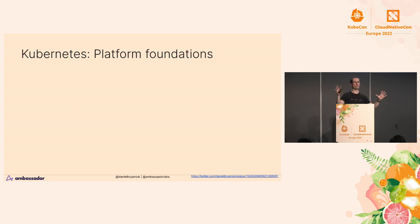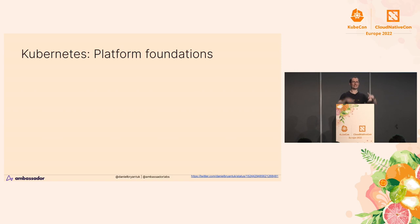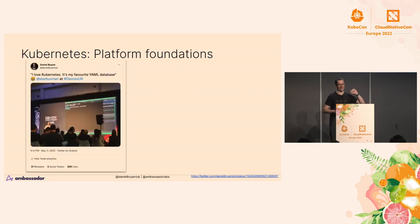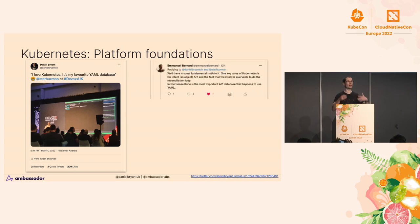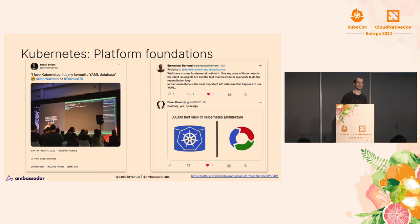Kubernetes — some folks literally look at it and think it's a PaaS. They think it's a Heroku, a Cloud Foundry, and they're disappointed when it doesn't do all the code-ship-run things. But other folks look at Kubernetes and see it as that foundational platform component. Josh Long — if you're in the Java space you know him — said 'I love Kubernetes, it's my favorite YAML database.' Emmanuel, a database specialist who works on Hibernate, jumped in: 'Kube is an API database that happens to be in YAML.' And then Brian Grant, co-creator of Kubernetes, said 'yeah, by design.' Kubernetes is the API database — one of your core foundational pieces of your platform.